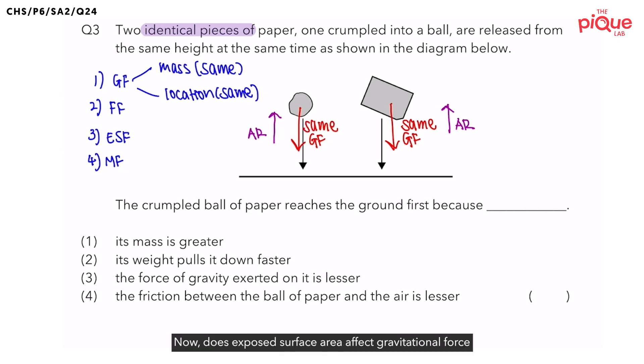Now, does exposed surface area affect gravitational force or air resistance? To answer this question, I would like you to think of a parachute test. When a parachute opens, the parachute will have a larger exposed surface area and trap more air. Hence, there will be more air resistance acting upwards on the parachutist, allowing him to float for a longer period of time.